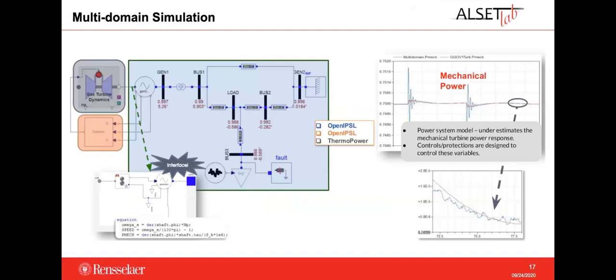This other application shows how we can leverage the Modelica environment to perform multi-domain simulation. The gas turbine, which is usually represented by a couple of time constants in most power system modeling tools, is here modeled in detail using the Thermal Power Library — also a Modelica library. We take advantage of an existing Modelica library to represent part of the system in a more detailed view; we just need to create an interface between them.